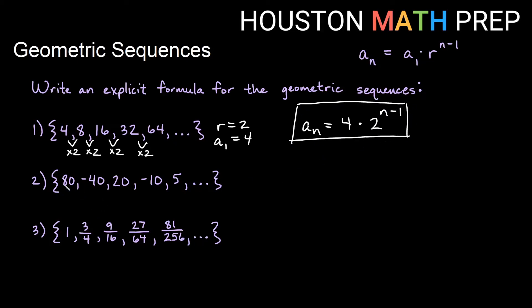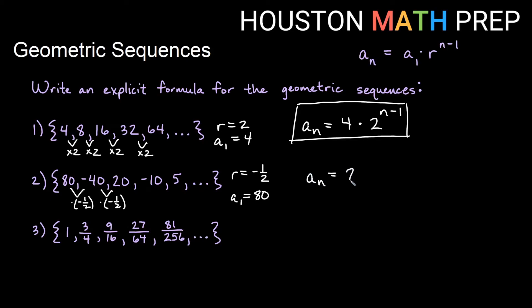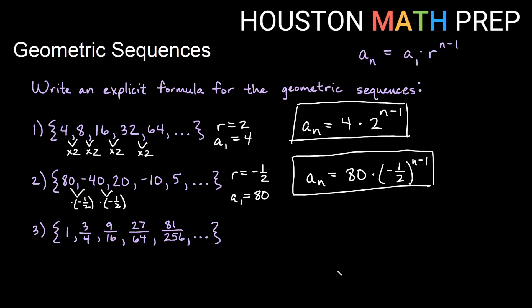For the second one, we've got 80, negative 40, 20, negative 10, 5. You can see alternating signs. If you take any term and divide it by the term before it, you get negative one half. So I multiply 80 by negative one half to get negative 40, then multiply by negative one half to get positive 20, and so on — we get that same pattern. Our common ratio is negative one half, and the first term is 80. The formula is: a sub n equals 80 times negative one half to the n minus 1. When I have a fraction like that, I need to write the whole fraction in parentheses before the exponent n minus 1.